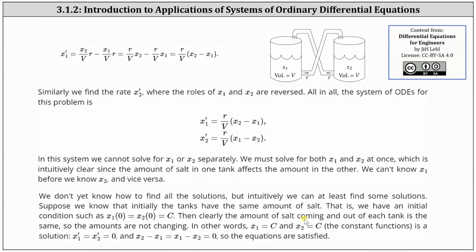Then clearly, the amount of salt coming in and going out of each tank is the same, so the amounts are not changing. In other words, x1 equals C and x2 equals C, where C is some constant.